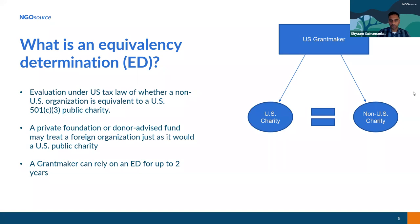This is where an equivalency determination, or an ED, comes in. An ED is a good faith determination of whether a non-U.S. organization is the equivalent of a 501(c)(3) public charity. It is designed for U.S. grantmakers that want to distribute funds to a non-U.S. organization that has not received a ruling or determination that it is a 501(c)(3) public charity. We don't evaluate the effectiveness or quality of service of the organization — we're focused on the legal requirements, whether it is legally equivalent to a 501(c)(3) public charity.